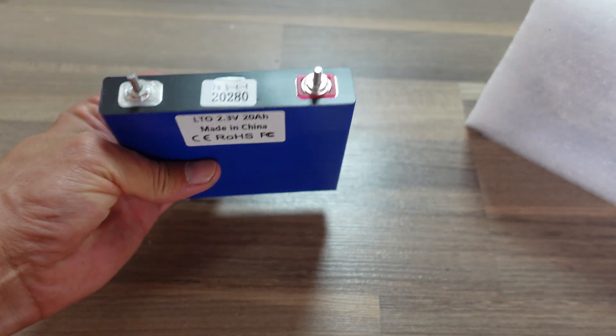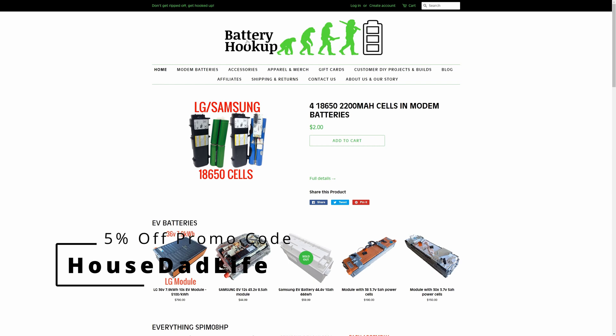To begin building this cell I ordered up six of these batteries. I got these batteries from batteryhookup.com. If you do decide to get some batteries from there as well be sure to use the coupon code HOUSEDADLIFE and it'll get you 5% off plus it gives me a kickback for producing these kind of videos.